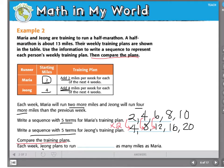Two times two gives me four. Four times two gives me eight. When I compare the training plans, I can see that each week, Young plans to run two times, or you could write twice, as many miles as Maria.